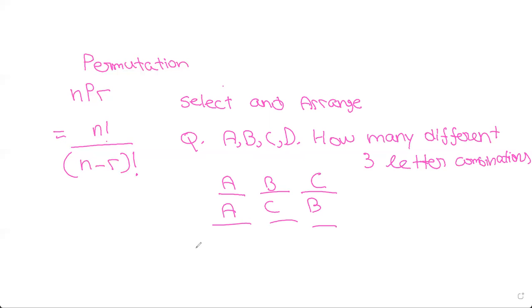So you do nPr. N is the total number, so there's 1, 2, 3, 4. And r is the different number of combinations possible, which is 3. So 4P3, which is four factorial divided by four minus three factorial, which is 24. So there are 24 different three-letter combinations.